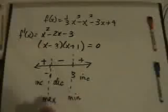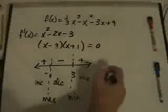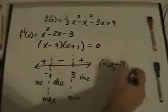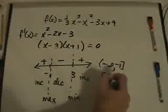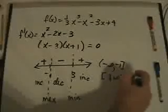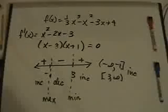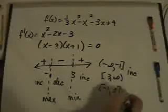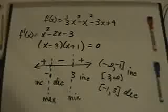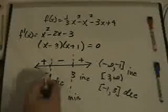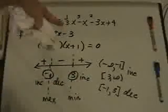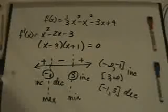I'm increasing on the intervals from negative infinity to -1 and from 3 to infinity, and decreasing on the interval from -1 to 3. To find the actual points, plug x = -1 and x = 3 back into the original formula.